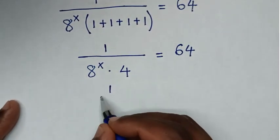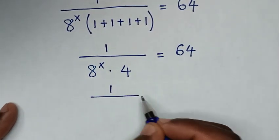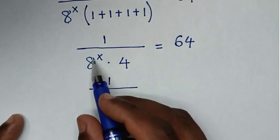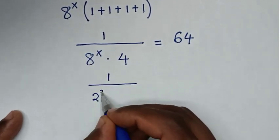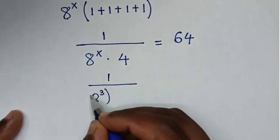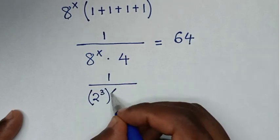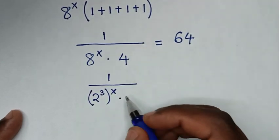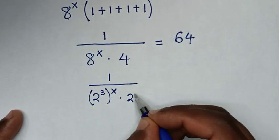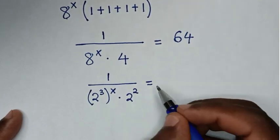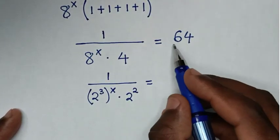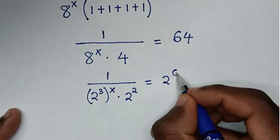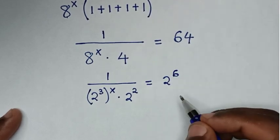In the next step, for 8^x we write 8 in base 2: 8 equals 2 to the power of 3. And 4 equals 2 to the power of 2. So we have 1 over (2^3)^x times 2^2, which equals 64 — the same as 2 to the power of 6.